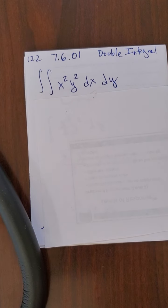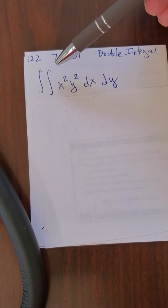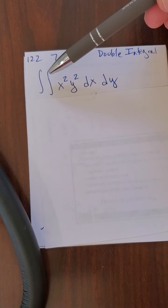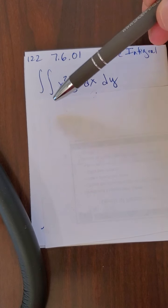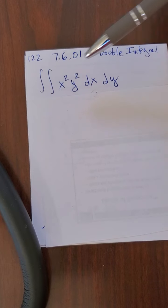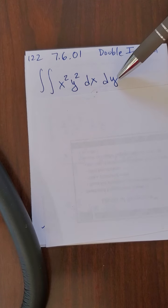So first of all, when you have a double integral, you go from the inside to the outside. So here I have the integral of x squared y squared dx, and that's inside the bigger integral of this blob dy.